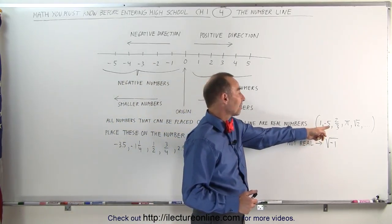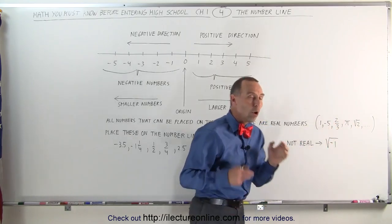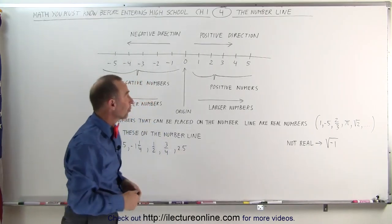Well here are some examples of them. The number 1, negative 5, 2 thirds, pi, the square root of 2 and so forth. All those numbers can be placed somewhere on the number line and therefore they're called real numbers.